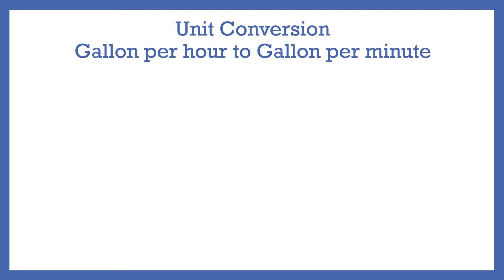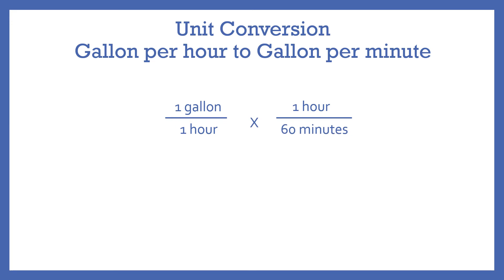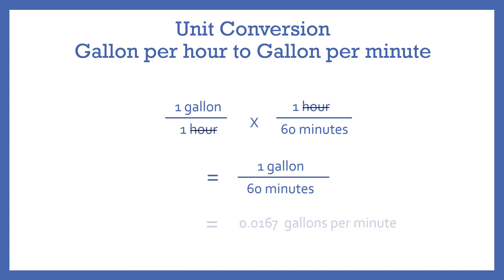Converting from gallons per hour to gallons per minute is relatively straightforward and relies on the fact that there are 60 minutes in an hour. So if you have a flow rate of one gallon per hour, you multiply that value by one hour per 60 minutes. The units of hour cancel out, and the result is one gallon per 60 minutes. You then divide the one gallon by 60 minutes, and the result is 0.0167 gallons per minute.